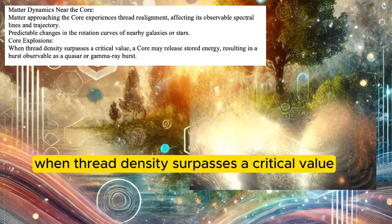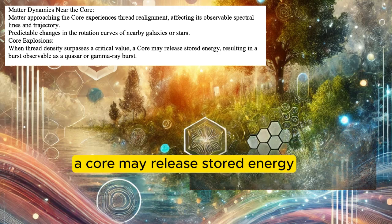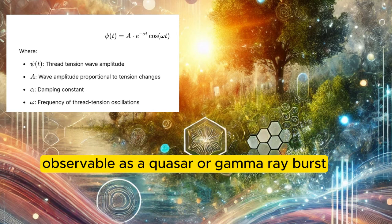Core explosions. When thread density surpasses a critical value, a core may release stored energy, resulting in a burst observable as a quasar or gamma-ray burst.